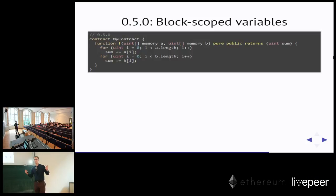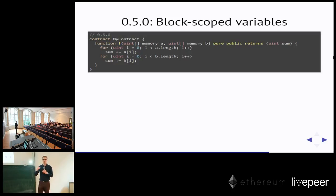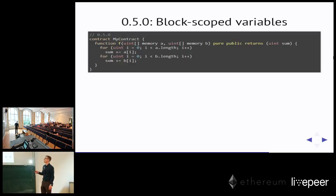Block scope means variables are visible inside the curly-braces block they were declared in, with the single exception that a variable declared in a for loop's initializer is visible in the loop but not after it. Another advantage of block scope in Solidity is that it helps the 16-variables-per-function limitation, because variables can be removed from the stack when their scope ends. Previously the scope was the full function. Now you can have more than 16 variables in a single function as long as you don't have more than 16 variables visible at the same time.